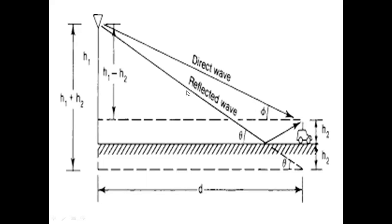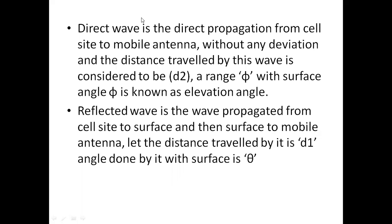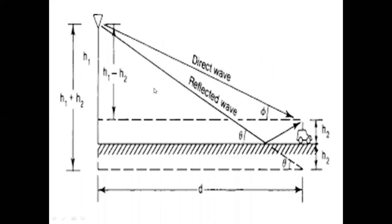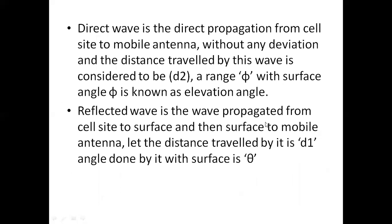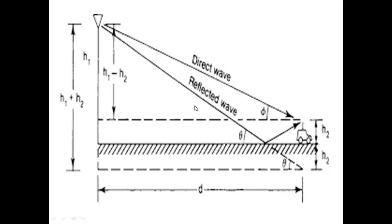There are two types of waves: a direct wave and a reflected wave. The direct wave propagates from the cell site to the mobile unit without any deviation, with angle phi. The reflected wave propagates from the cell site to the ground and then from the ground to the mobile unit, with angle theta. We denote the reflected wave distance as D1 and the direct wave distance as D2.